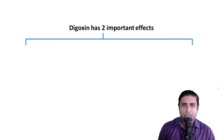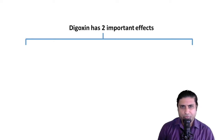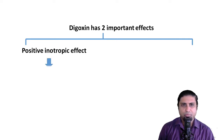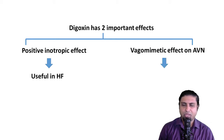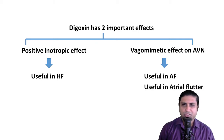In the previous videos, we discussed that digoxin has two important effects. Firstly, it has a positive inotropic effect on the heart, making it useful in the management of heart failure with reduced ejection fraction. We also discussed that digoxin has a vagomimetic effect on the AV node and therefore is useful in the management of conditions such as atrial fibrillation and atrial flutter. Now it's worth investing some time into developing at least a rudimentary understanding of atrial fibrillation and atrial flutter, as this would help us get a better appreciation of how digoxin is useful in the management of these entities.